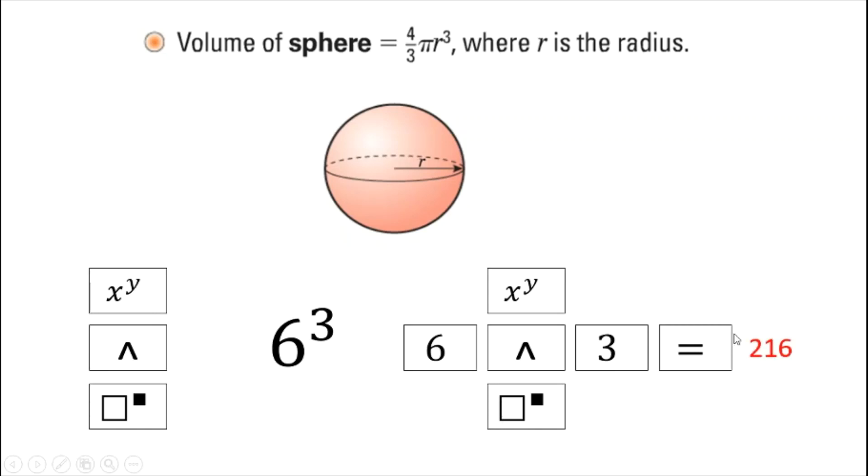If you're using a basic calculator, you'll have to do the equivalent, which is 6 times 6 times 6. It will still give you the same thing because 6 cubed just means three 6s all multiplied together.